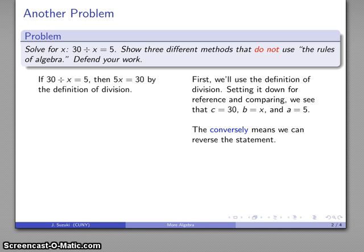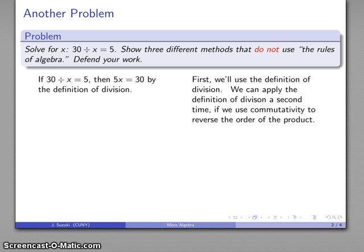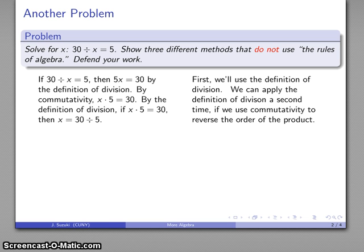By commutativity, I can reverse the order of the product: x times 5 equals 30. I can then apply the definition of division.